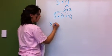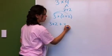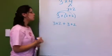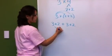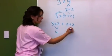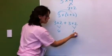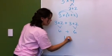which leaves you with 3 times 2 plus 3 times 2. You can then multiply: 3 times 2 is 6, and 3 times 2 is 6. Add them together and you get 12.